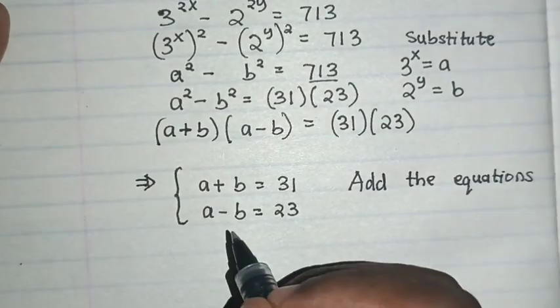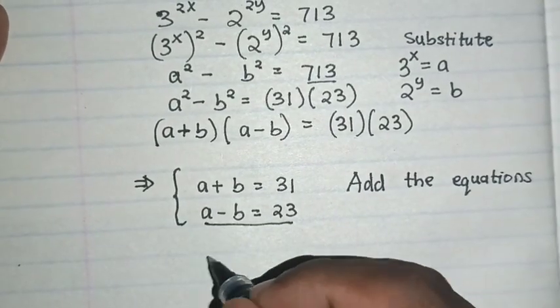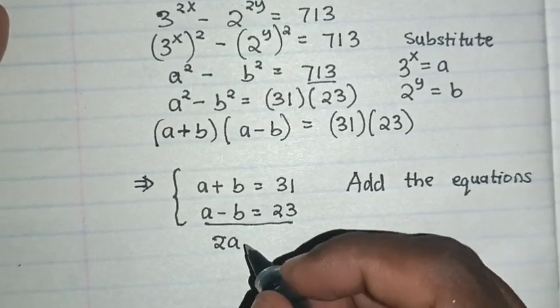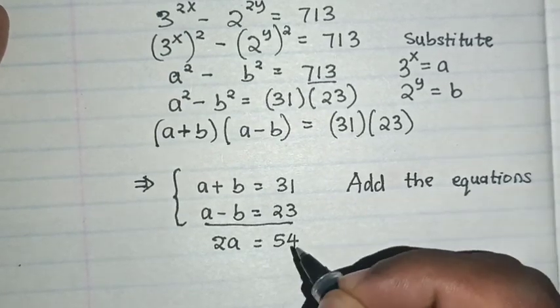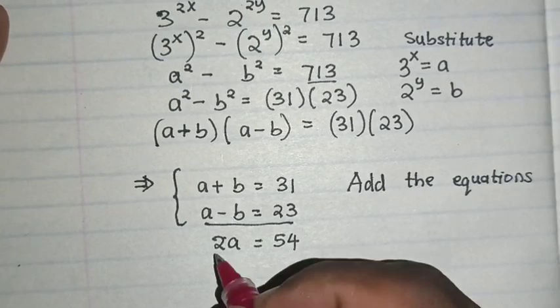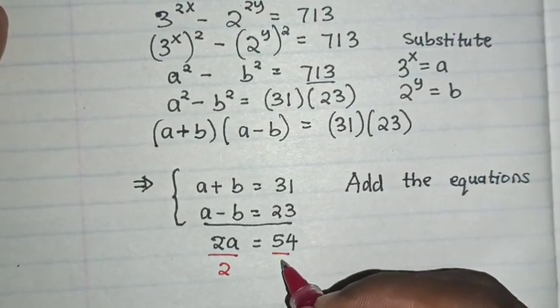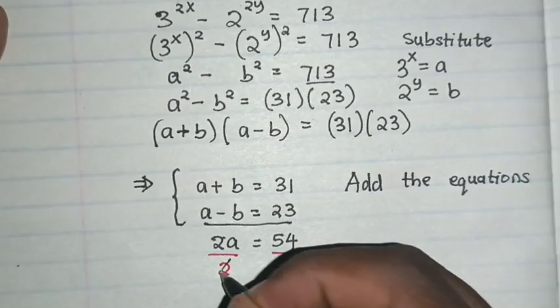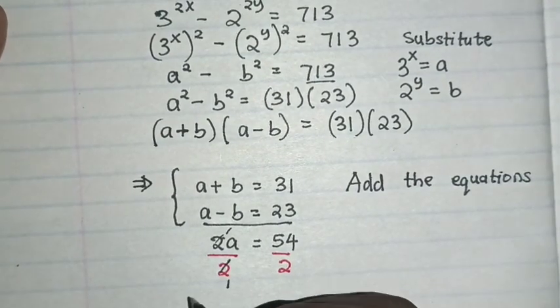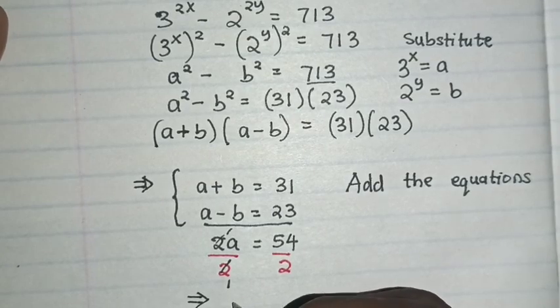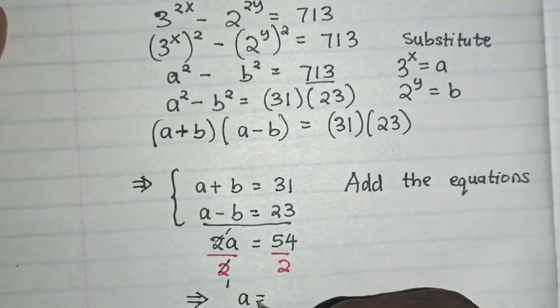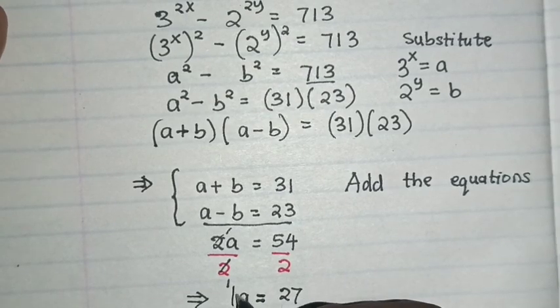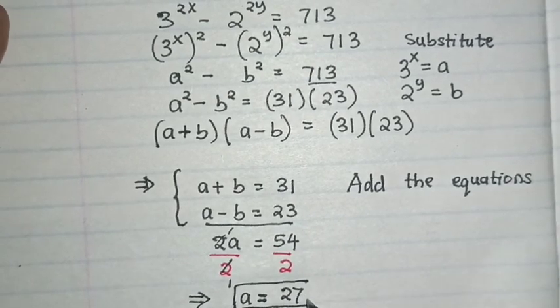So when you add this side it will be 2a. b minus b is 0. So 2a = 54. So we divide by 2. It will remain a = 27.